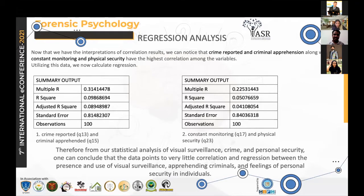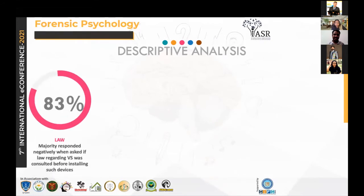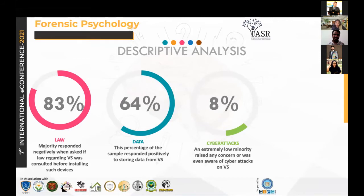To understand why this is happening — because visual surveillance should affect personal security or at least show some relationship to crime — I further analyzed other components and factors. The first factor is law, where 83% of respondents said they do not have any regard to law when installing visual surveillance or even after installation. The next factor is data, where 64% said they do store visual surveillance data, but they have never actually gone and checked that data. On cyber attacks, only 8% of respondents were even aware that cyber attacks are possible in visual surveillance.